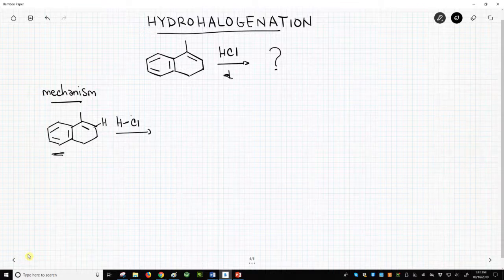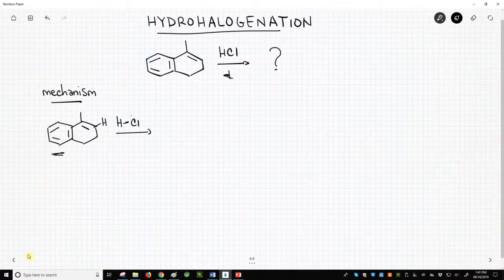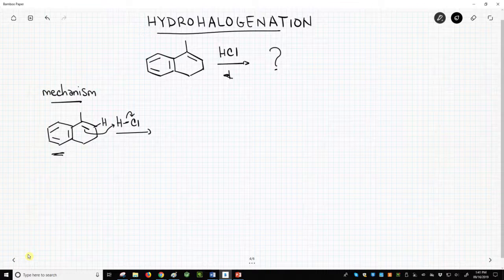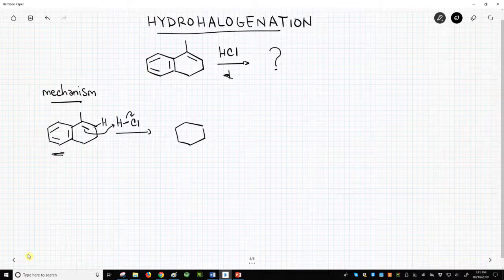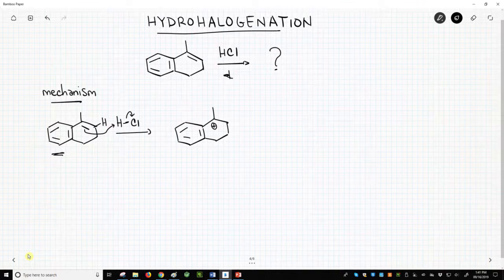The carbon-carbon pi bond is slightly electron-rich and acts as a weak base. The pi bond attacks the proton and breaks the hydrogen-chlorine bond, resulting in a carbocation intermediate.